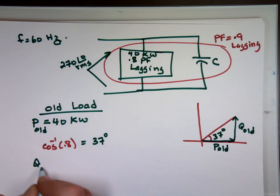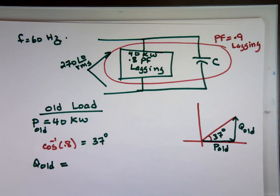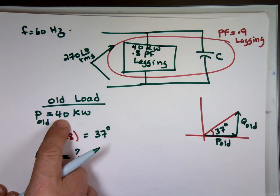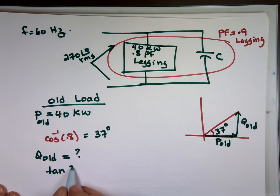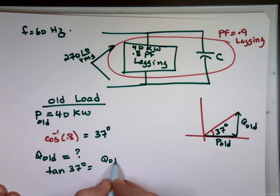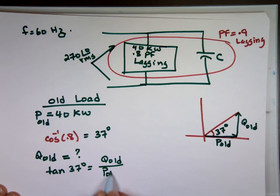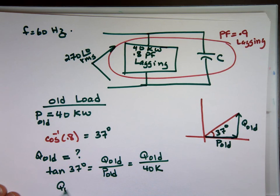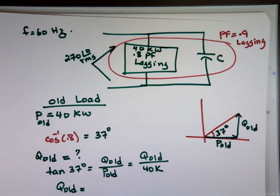Can I find now Q old? Using geometry. Is it tangent? Do we have P old or not? Yeah, P old is this one, the real power. Tangent 37 degrees is equal Q old over P old, which equals Q old over 40,000.